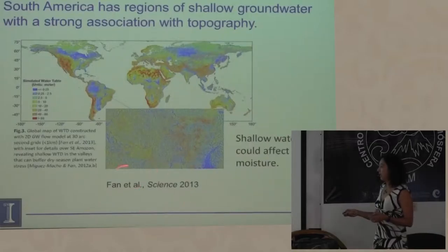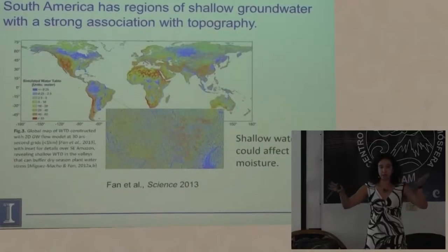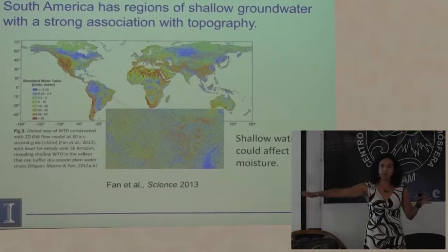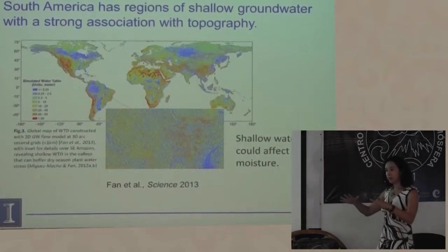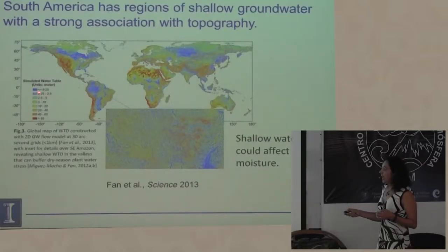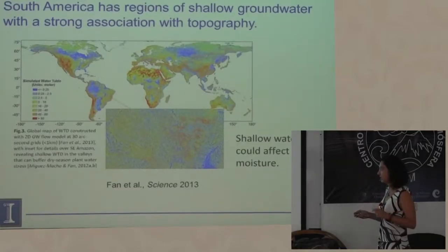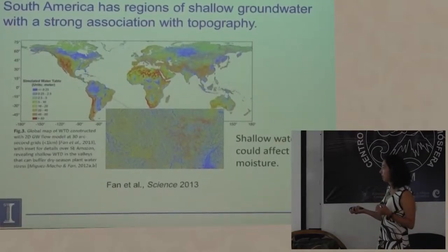Este es un artículo muy bueno de Ryan Fielder, publicado en la revista Science 2013. Lo que hicieron es mapear el nivel freático, combinando observaciones —hay miles en todo el mundo— y un modelo para sacar este mapa global del manto freático. Cualquier área en azul es donde el manto freático tiene menos de 2.5 metros. Este umbral de 2 metros es importante porque ahí es donde la mayor parte de los modelos tienen sus raíces. Básicamente, todo lo que está en azul quiere decir que la vegetación podría tener acceso potencial al agua subterránea.